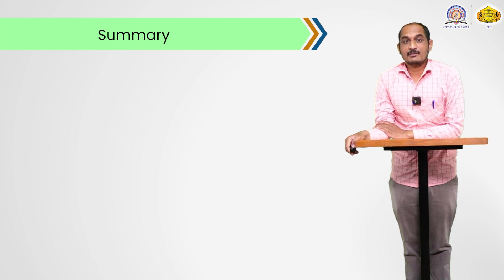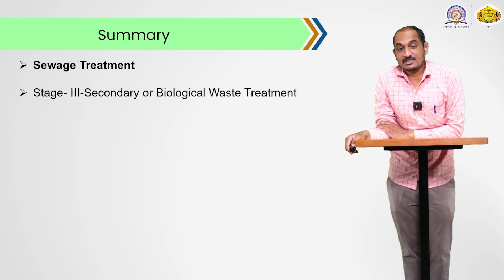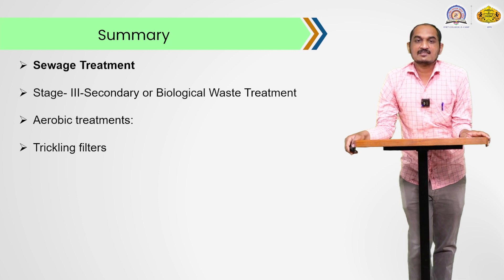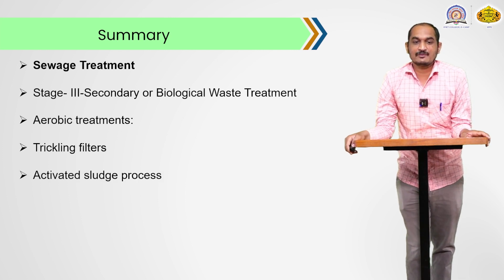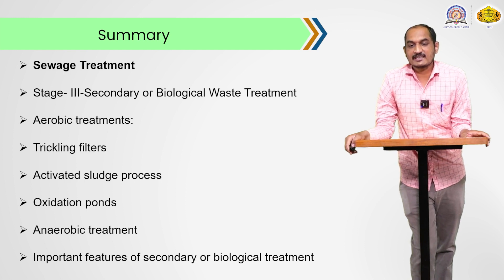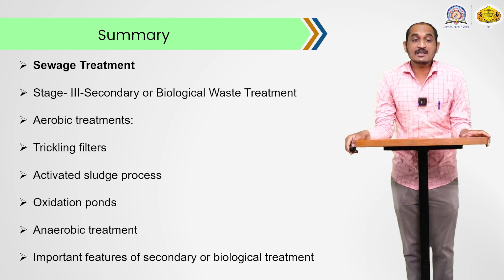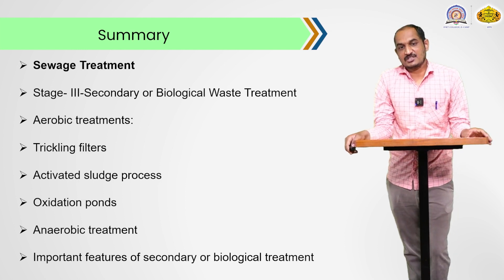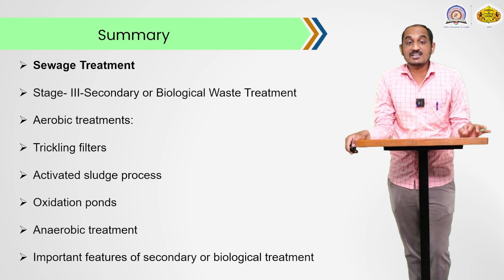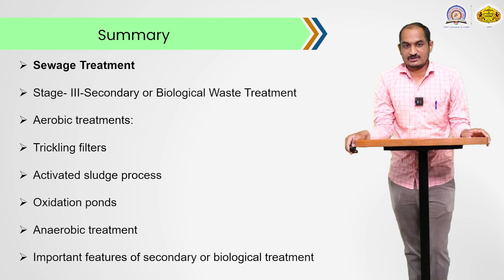Dear students, here is the summary of today's session. We discussed the sewage treatment third stage — secondary or biological waste treatment — including aerobic treatment, trickling filters, activated sludge process, oxidation ponds, anaerobic treatment, and the important features of secondary treatment. In the next session, we will continue sewage treatment and discuss stage number 4, that is the tertiary or advanced biological-chemical treatment for wastewater. Thank you very much.